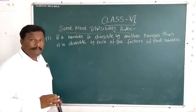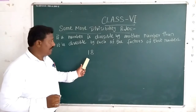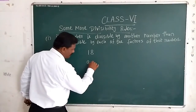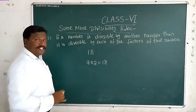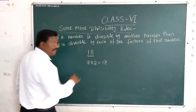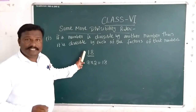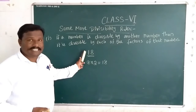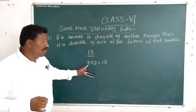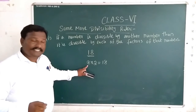Take the number 18. If you find the factors of 18, we know 9 is a factor of 18, because 9 times 2 is 18. So 9 is a factor and 2 is also a factor. Now, what is the factor of 9? 3 times 3 is 9, so 3 is a factor of 9.